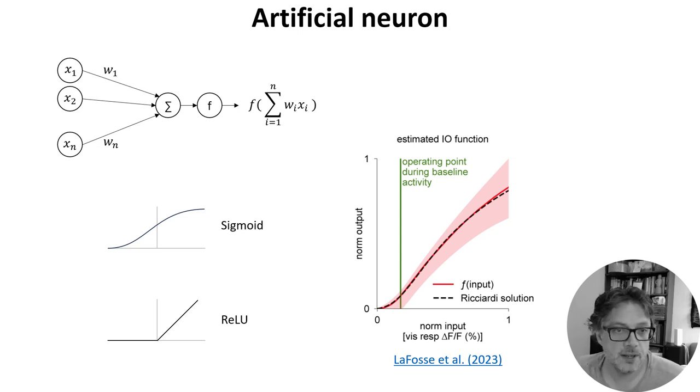The relationship between the model and the biological data is established by computing an input-output function, typically by counting the number of spikes coming into the neuron versus the number of spikes going out, averaged over multiple runs and some time period.